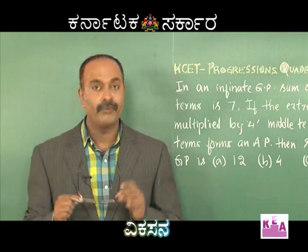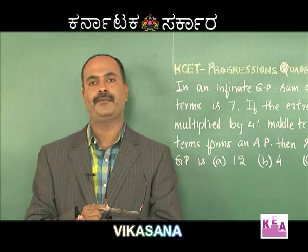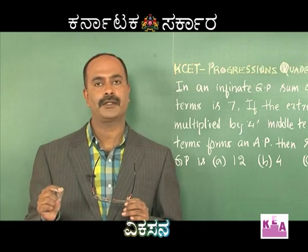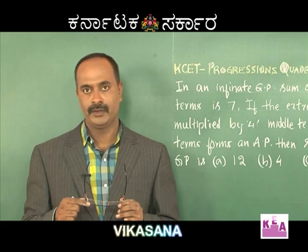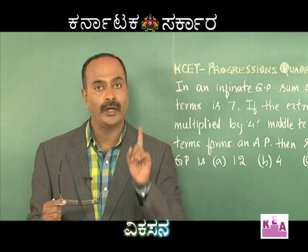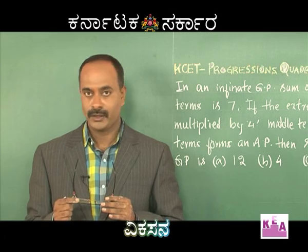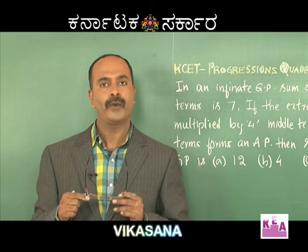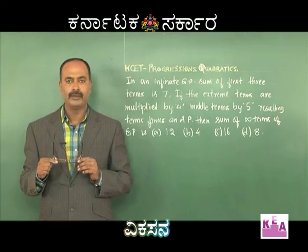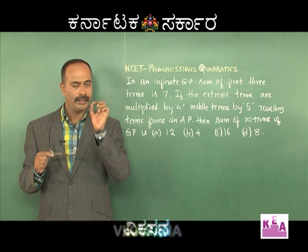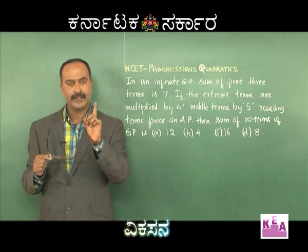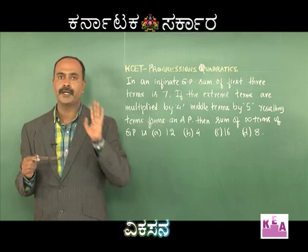Before discussing the next problem, let me introduce one more concept: the sum of an infinite GP. The most familiar example is 1 + 1/2 + 1/4 + 1/8 + ... = 1/(1 - 1/2) = 2, which you studied in 8th or 10th standard. In an infinite GP, it is always a reducing GP — first term is greater than the second, second greater than the third, and so on.